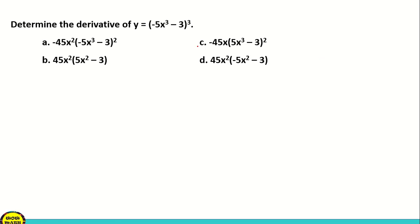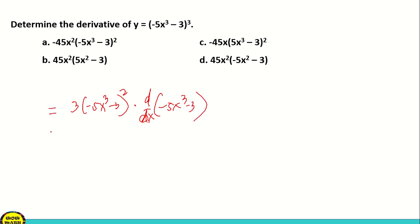For question number 3, we need to determine the derivative of y equal to the quantity of negative 5x cubed minus 3, all cubed. We can use the chain rule. The exponent 3 is multiplied first, giving us 3 times negative 5x cubed minus 3 squared, with the exponent reduced. Then we multiply by the derivative of the inside. The derivative of negative 5x cubed minus 3 is negative 15x squared.